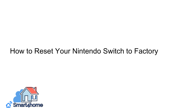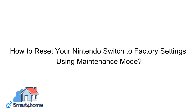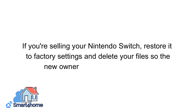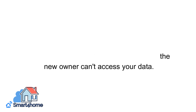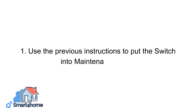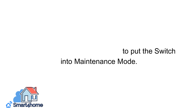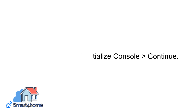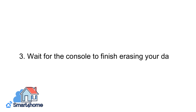How to reset your Nintendo Switch to factory settings using Maintenance Mode. If you're selling your Nintendo Switch, restore it to factory settings and delete your files so the new owner can't access your data. 1. Use the previous instructions to put the Switch into Maintenance Mode. 2. From there, select Initialize Console, then Continue. 3. Wait for the console to finish erasing your data.